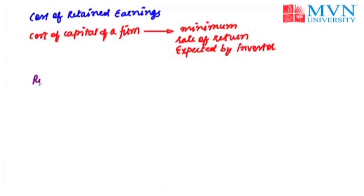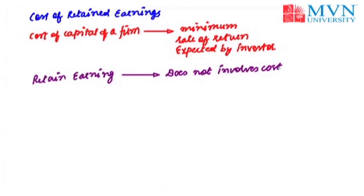But in the case of retained earnings, it is sometimes argued that retained earnings does not involve any cost because a firm is not required to pay dividends on the retained earnings. However, the shareholders expect a return on the retained earnings because retained earnings accrues to a firm only because of some sacrifice made by the shareholders in not receiving the dividends out of the available profits.